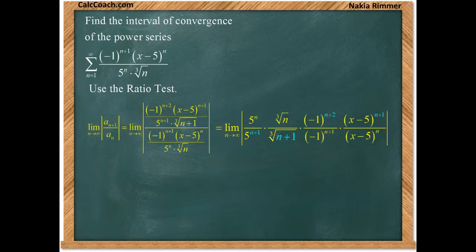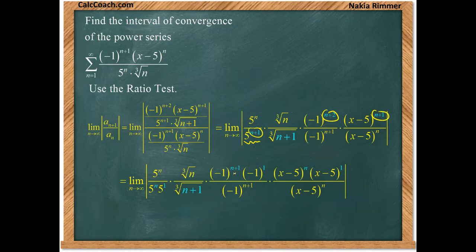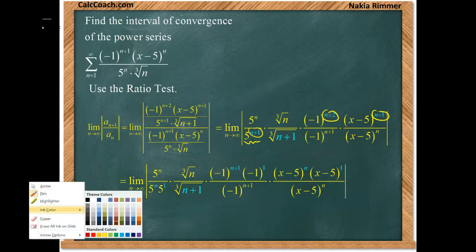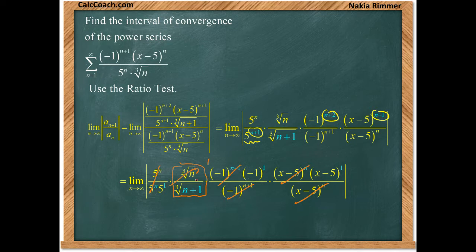We handle each fraction separately when we look at the limit. We take 5 to the n plus 1 and make it 5 to the n times 5. We take negative 1 to the n plus 2 and make it negative 1 to the n plus 1 times negative 1. We take x minus 5 to the n plus 1 as x minus 5 to the n times x minus 5. This way the 5 to the n's cancel, the negative 1 to the n plus 1's cancel, and the x minus 5 to the n's cancel. For the cube root fraction, as n gets large, cube root of n divided by cube root of n plus 1 goes to 1.